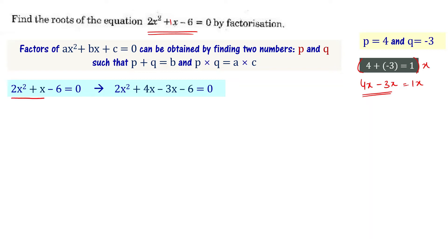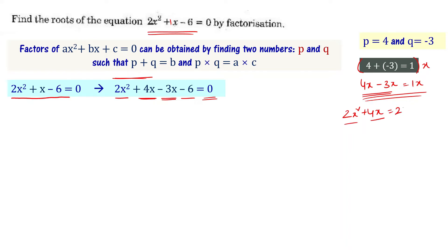So 2x² + x - 6 = 0 becomes 2x² + 4x - 3x - 6 = 0. Now consider the first two terms: 2x² + 4x. The common factor is 2x. Taking 2x out, we get 2x(x + 2).